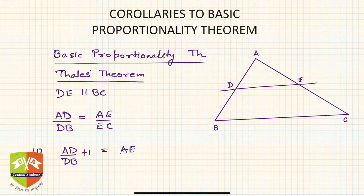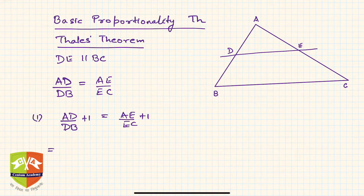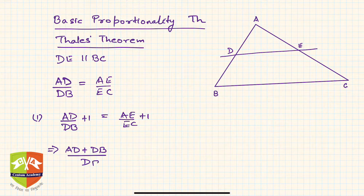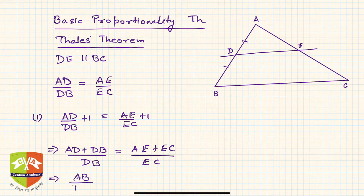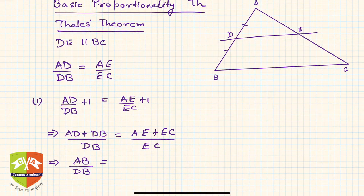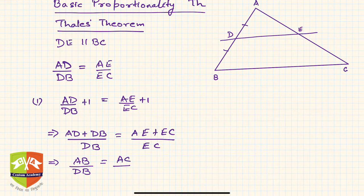To derive the first corollary, we add 1 to both sides of the equation. So AD/DB + 1 = AE/EC + 1. Taking LCM and doing the basic mathematics, we get (AD + DB)/DB = (AE + EC)/EC. Now AD + DB is simply AB, so we can write AB/DB = AC/EC.